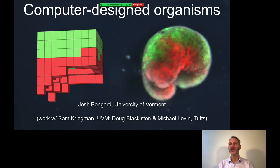I wanted to talk about some work on computer-designed organisms, and this is joint work between my group here at the University of Vermont. We are computer scientists and roboticists. The bulk of the computational design work that I'm going to talk about today was work by my PhD student, Sam Kriegman, and we created a collaboration with two of our biology colleagues at Tufts, Doug Blackiston and Michael Levin. Michael runs the Allen Discovery Center on Regenerative Biology at Tufts.